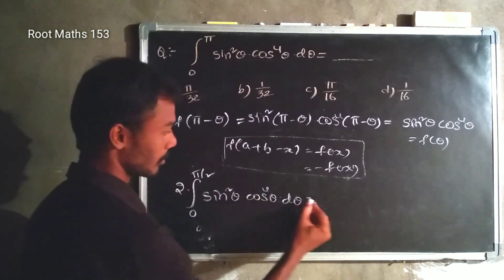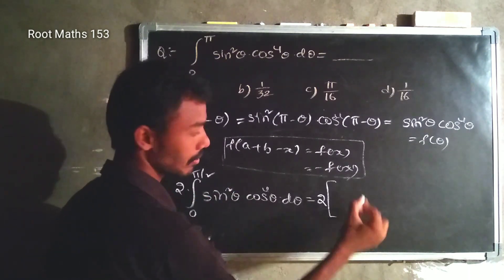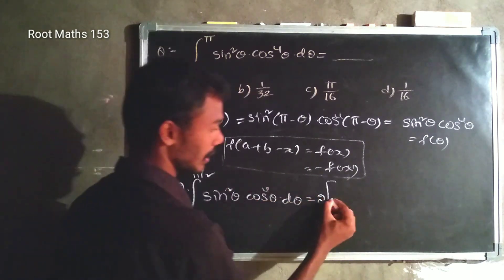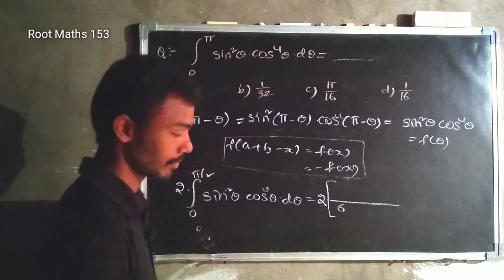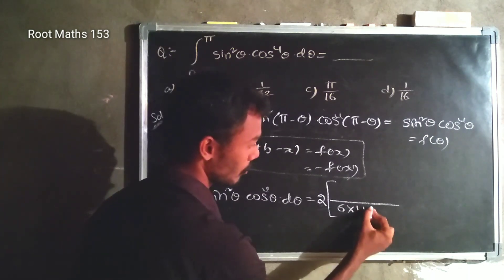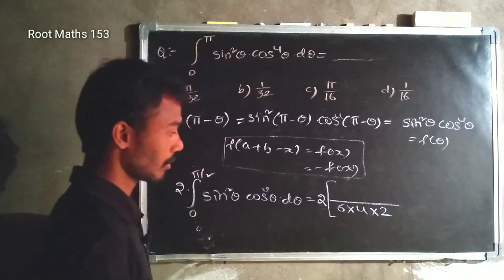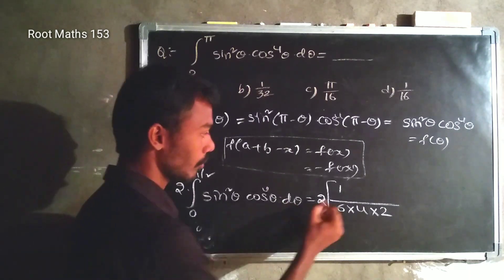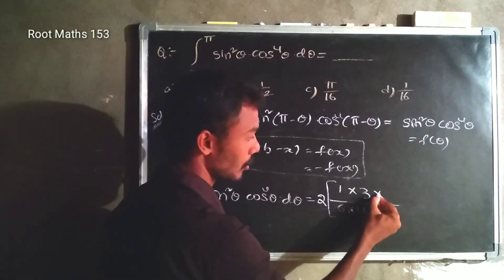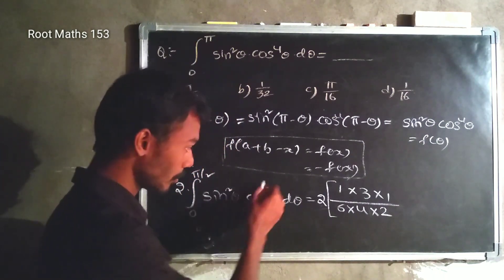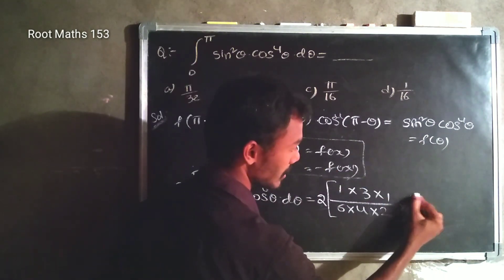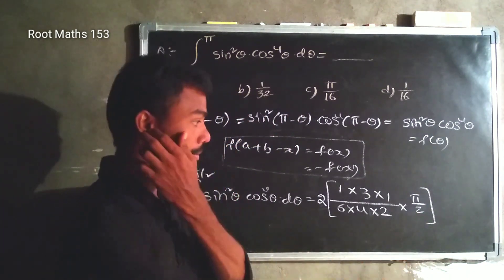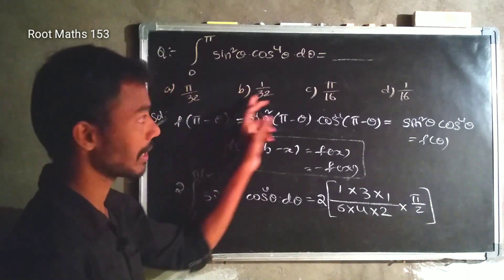Now we apply the Wallis formula. We need to apply the formula with m equals 2 and n equals 4. The denominator: 6 into 4 into 2. The numerator for the sin part: only 1. The numerator for the cos part: 3 into 1. Since both powers are even, we multiply by pi by 2.